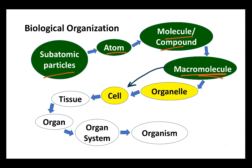Bacteria don't have organelles, and that cell is in fact the entire organism. In multicellular organisms, cells can be organized into a greater unit of complexity called tissues, which can then be organized into organs, which can be organized into organ systems, and then the organism, which is the single living thing.